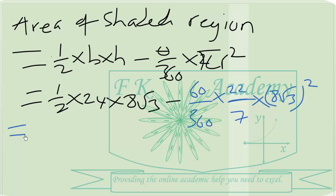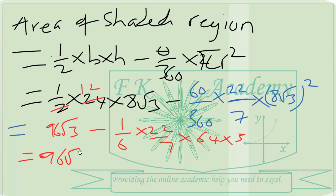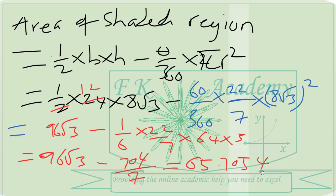Simplifying: 8 squared is 64, root 3 squared is 3. This gives us 96 root 3 minus 704 over 7, which simplifies to approximately 65.705. To 3 significant figures, that is 65.7 centimeters squared.